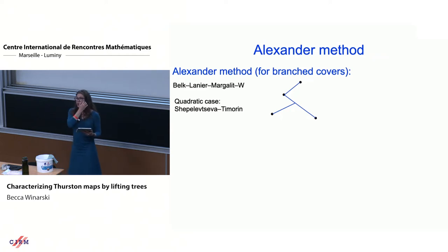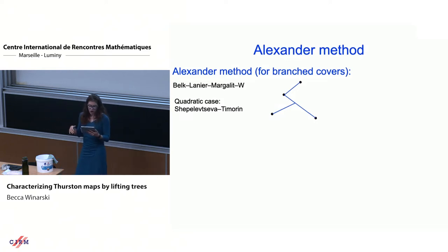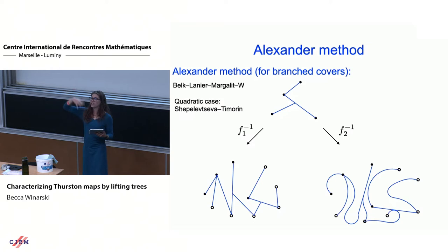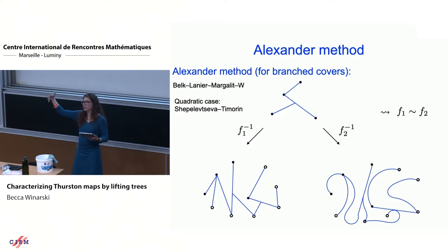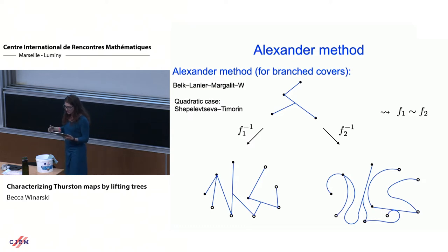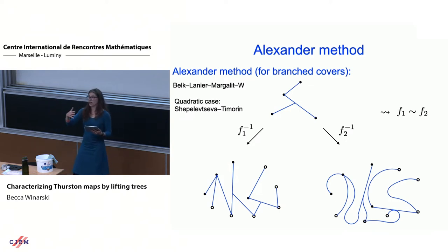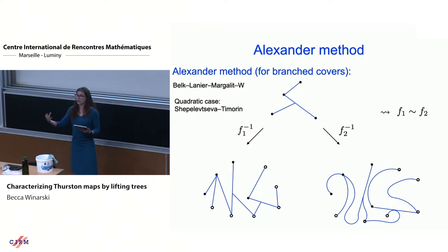Similarly, we use an Alexander method for branched covers. Due to Belk, Lanier, Margalit, and myself — also a special case of work by Timurin — if we take a tree and look at its pre-image under two branched covers, and if those two pre-images are isotopic as trees, then the branched covers themselves are isotopic. We also need the action of edges between the pre-image and the original tree, but a tree, its pre-image, and the action of the branched cover suffice to determine a topological polynomial.